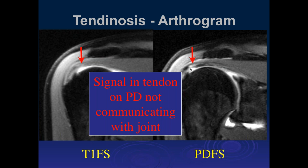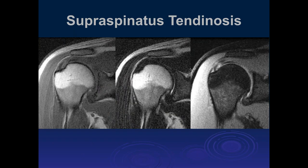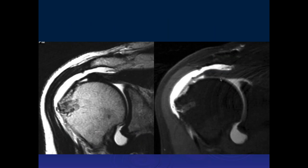Here's another example showing a little bit of increased signal intensity on T1, normal on T2, and increased signal intensity on PD fat-sat. Again, this is a case of tendinosis of the supraspinatus tendon.